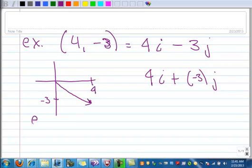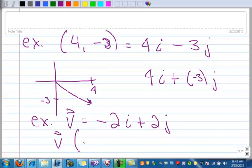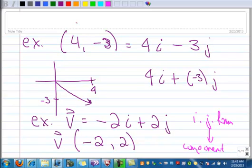And then we can go backwards. So if I was given a vector in i, j form, negative 2i plus 2j, and I wanted to write that in component form, well, that would simply be negative 2, comma 2. So this is going from i, j form to component form. And then this first one we went from component form to i, j form.